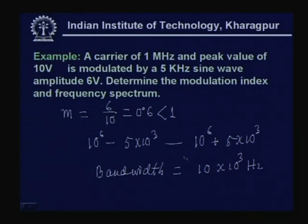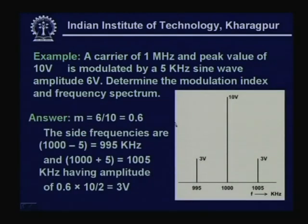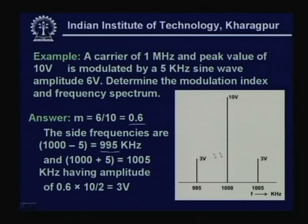The modulation index is 0.6, and the three frequency components are at 995 kHz, 1000 kHz, and 1005 kHz. The carrier has amplitude 10 V and the sidebands have amplitude 3 V. This is the frequency-domain representation of the modulated signal, which has three spectral components.